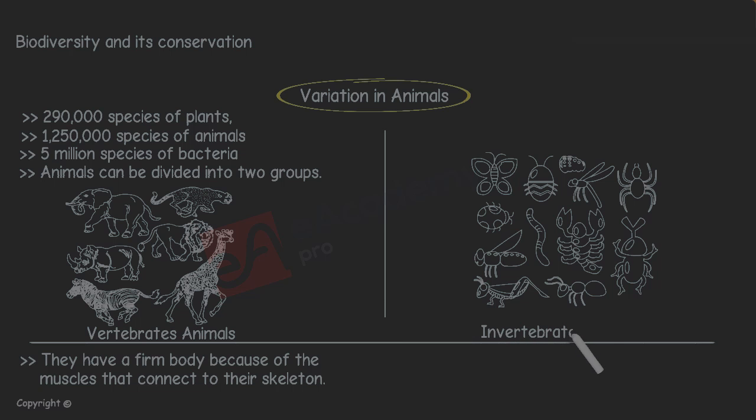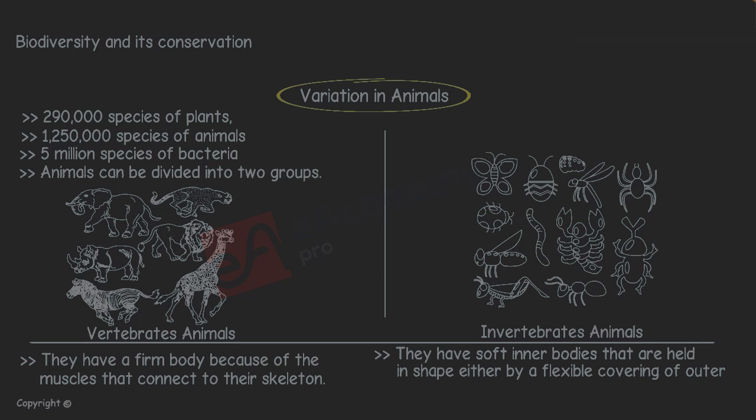Invertebrates do not have a backbone. They have soft inner bodies that are held in shape either by a flexible covering of outer cells or by a hard covering called an exoskeleton.